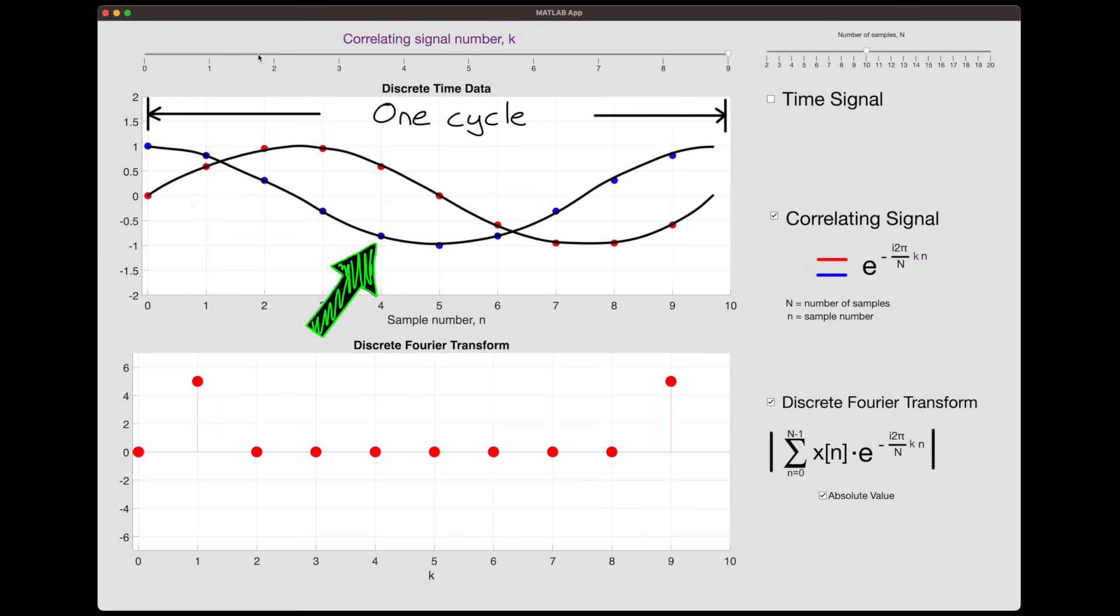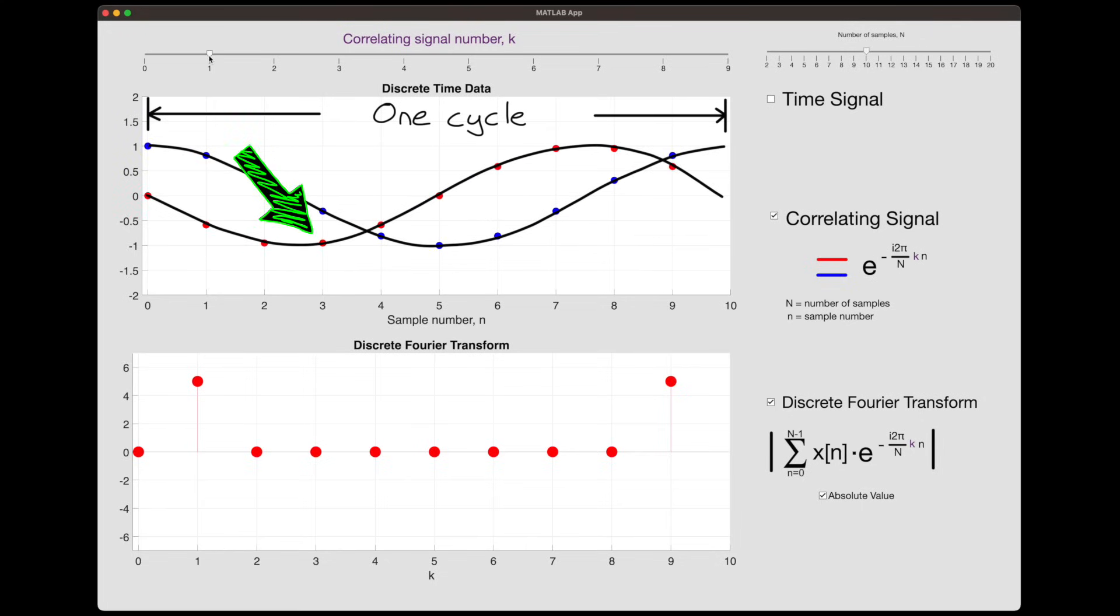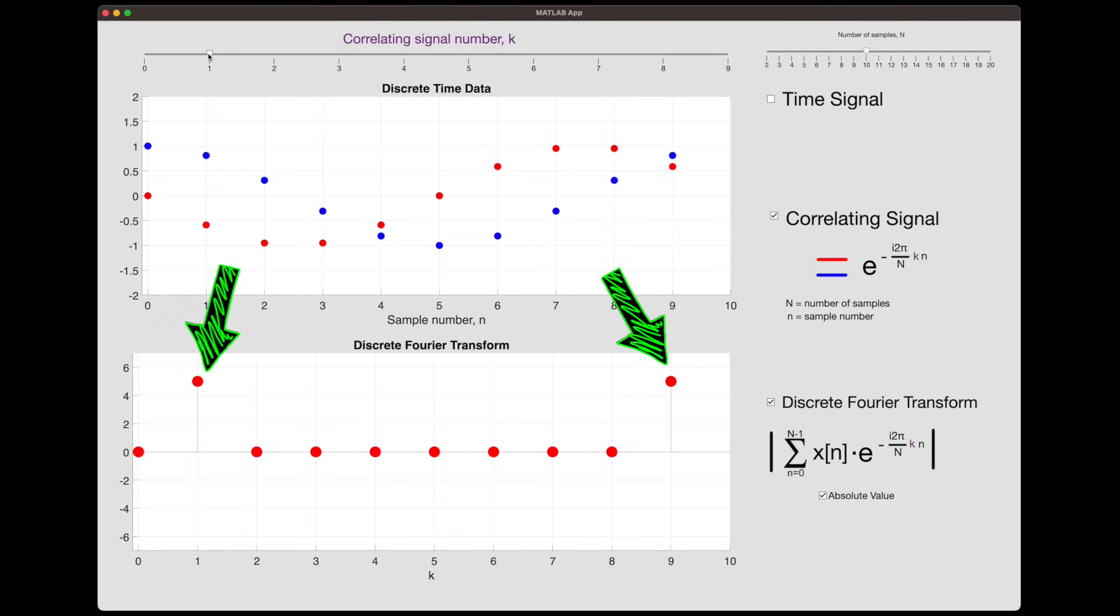Now, you'll notice that the real component isn't changing sign here. And that's because cosine is an even function. So the cosine of a positive number is the same as the cosine of a negative number. But the imaginary component does change sign, since sine is an odd function. This means that between k equals one and k equals nine, the magnitude of the FFT stays the same. And the same is true for k equals two and eight, and three and seven, and so on until we reach the Nyquist frequency.